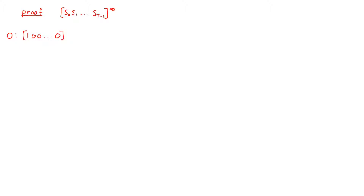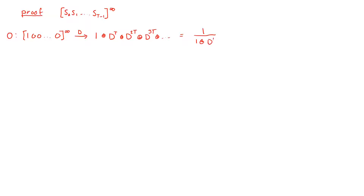This will be periodic, written like this. Now if we want to find the D-transform of this sequence, we can write this as 1 plus, and then the next one will come back at position with index t. So we have d to the t, and then again we will have this 1 at position 2t, and then again at position 3t, and so on. And this can be written as 1 over 1 plus d to the t.